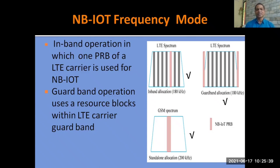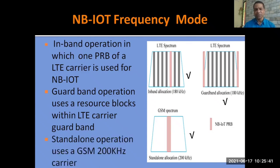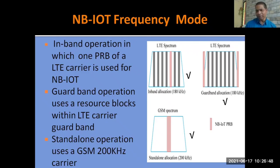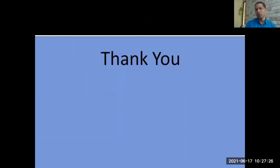The third mode is stand-alone operation, which uses GSM 200 kHz. GSM stands for Global System for Mobile Communication and is a second generation mobile service. These three modes of operation use the LTE and GSM spectrum in the most efficient way. That was all about NB-IoT — I hope you got it.